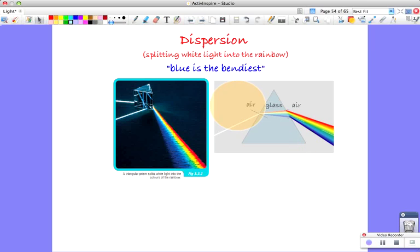I find a good way to remember the direction of each color: blue is the bendiest. In other words, the blue in the white light bends the most as it goes from air to glass and then glass to air, and ends up at the bottom of the rainbow.